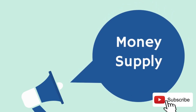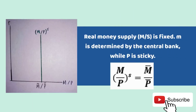Let's discuss money supply in more detail. The real money supply, M/P (supply), is fixed. M is determined by the central bank while P is also fixed. Therefore M/P supply equals M-bar over P-bar, meaning the value is already defined. The shape of the money supply curve is vertical.